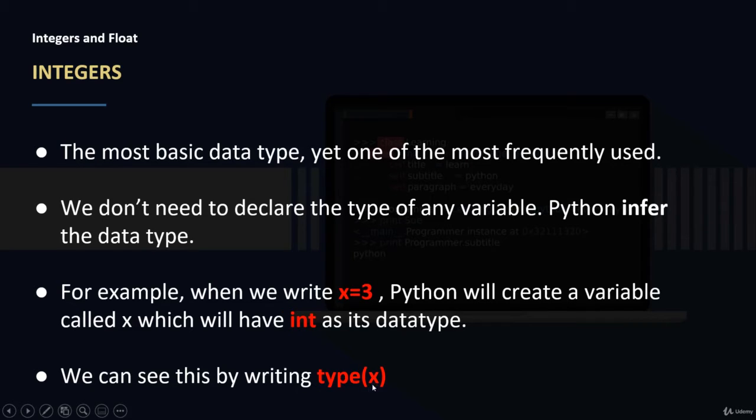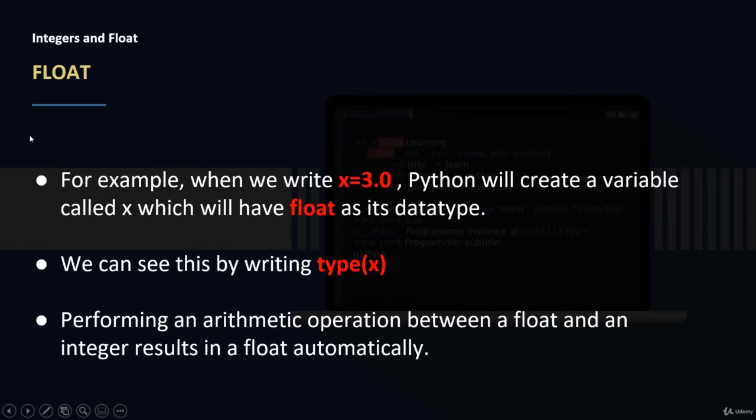The second data type is Float. For example, when we write x equals 3.0, Python will create a variable called X which will have Float as its data type. So once we have a floating point in a variable, then Python infers that the data type is Float.